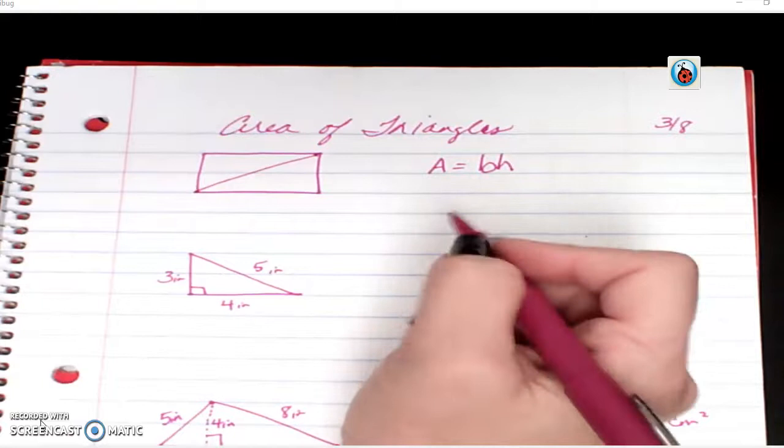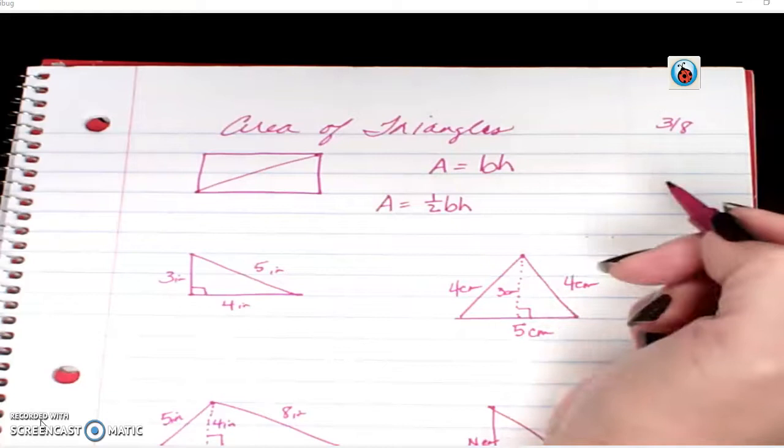So a triangle is half of a rectangle. Therefore, your formula for finding area of a triangle is going to be one-half base times height.